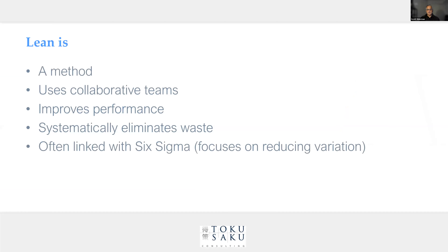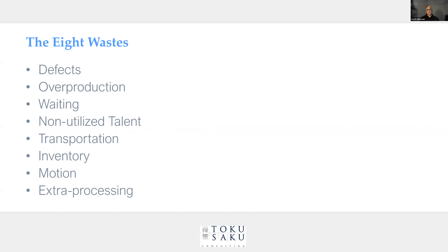What is lean? It's a method. We use collaborative teams and systematically focus on elimination of waste to ultimately improve performance. When appropriate and mature enough, we can integrate Six Sigma. The eight wastes — this is probably a review to everybody — started at seven and now there are eight, using the acronym DOWNTIME. These are all wastes: things we shouldn't be doing, or more importantly, that the customer wouldn't pay for if he knew we were doing it. These are things that inflate our costs and reduce the value we ultimately deliver.